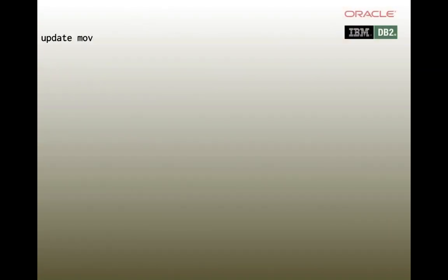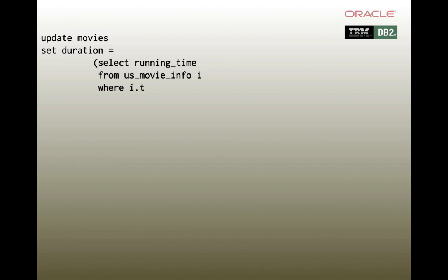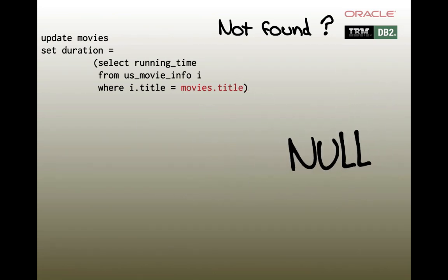Let's see how this UPDATE statement might be written in Oracle and DB2. I'm using a correlated subquery to set duration equal to the running time in US Movie Info where the titles match in both tables. It looks reasonable until you consider that without a WHERE clause, it's going to update every single row in the movies table. What about movies in our database that aren't in the US Movie CSV file? I have foreign films in the movies table. If they aren't found in US Movie Info, the column will be updated with NULL.